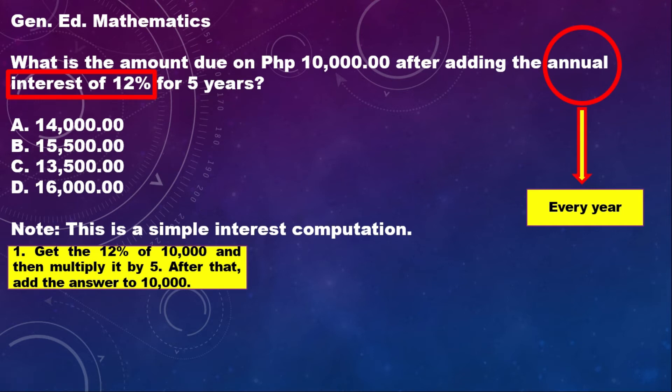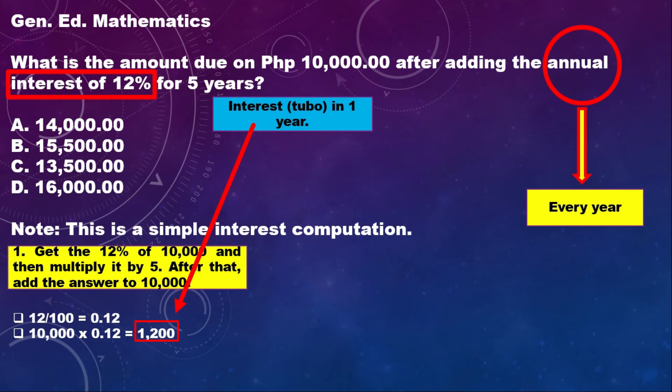First, you have to multiply 10,000 by 12%. Before that, you have to convert 12% into a decimal number. So 12 divided by 100, that is 0.12. Now multiply this 0.12 by 10,000 to get the 12%. So 10,000 times 0.12, that is 1,200. This 1,200 is now the one-year interest or tubo of the 10,000 that you borrowed.